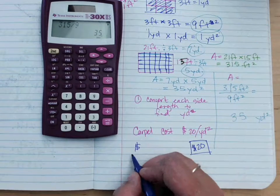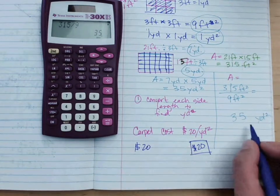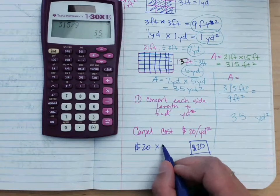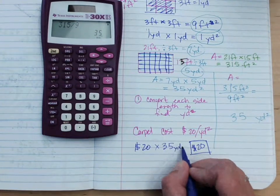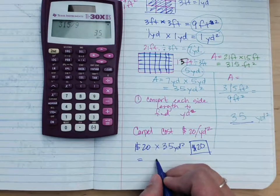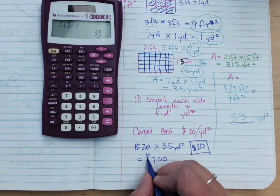If you go $20, how much will it cost altogether? $20 times, how did you get that? Times 35 yards squared. So, here, you're going to pay how much? $700 for the carpet.